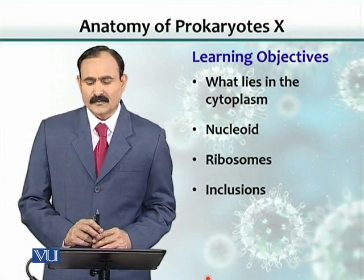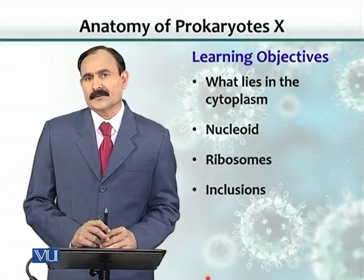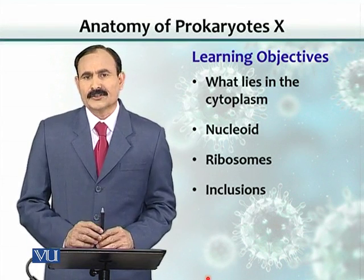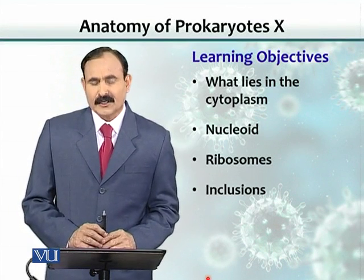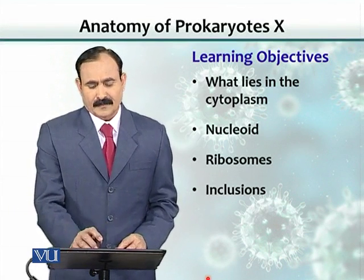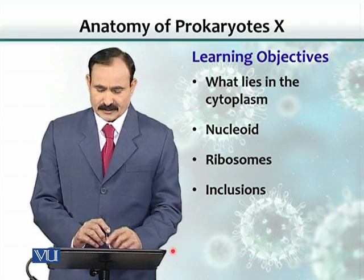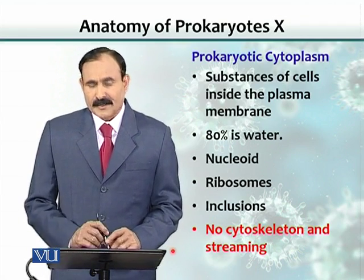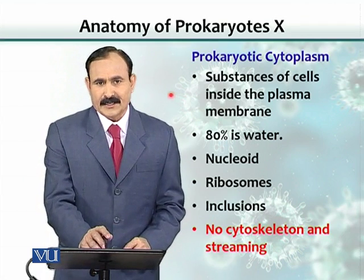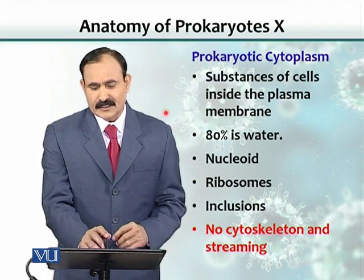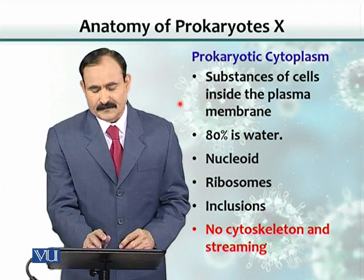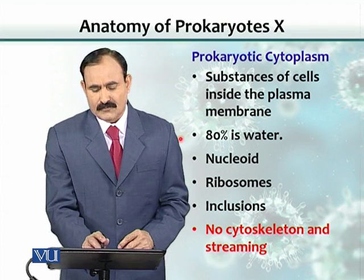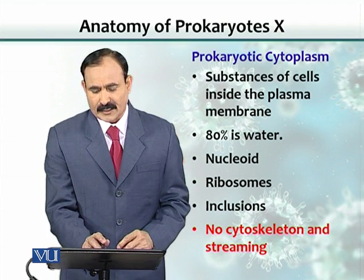Learning objectives include what lies in the cytoplasm. The structures that lie in the cytoplasm include the nucleoid, ribosomes, and inclusions. Basically, anything contained within the cytoplasm — most of it is water, about 80% — along with the nucleoid, ribosomes, and inclusions.